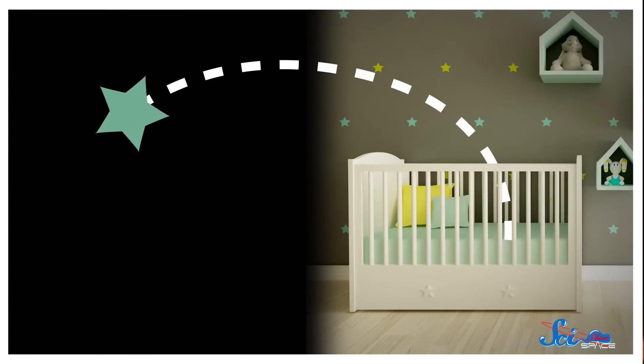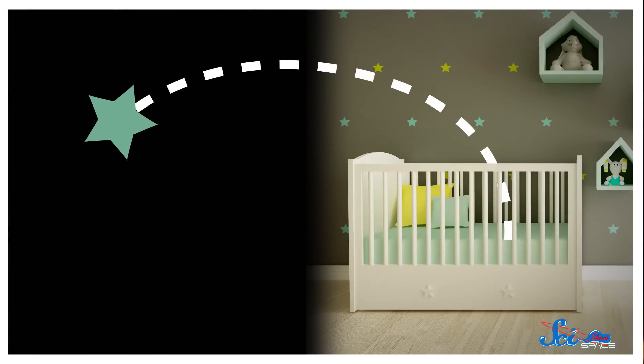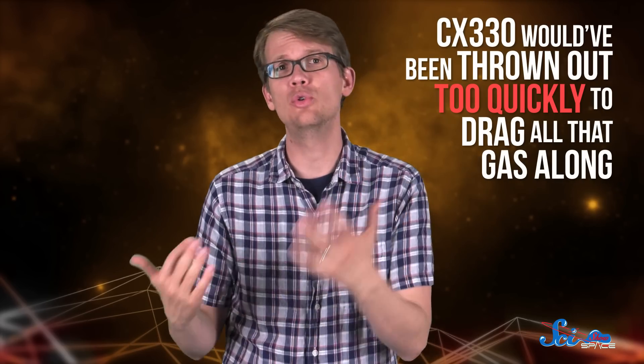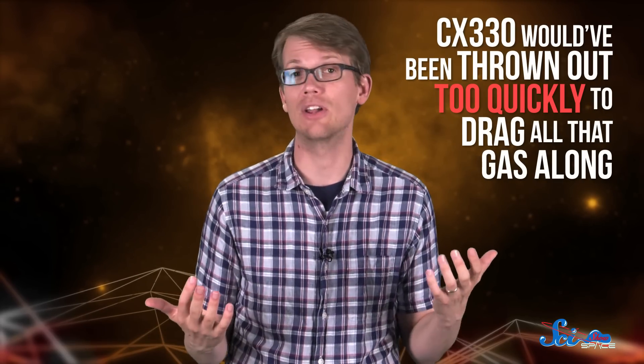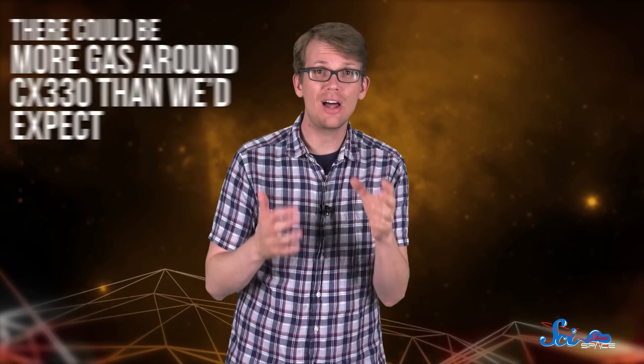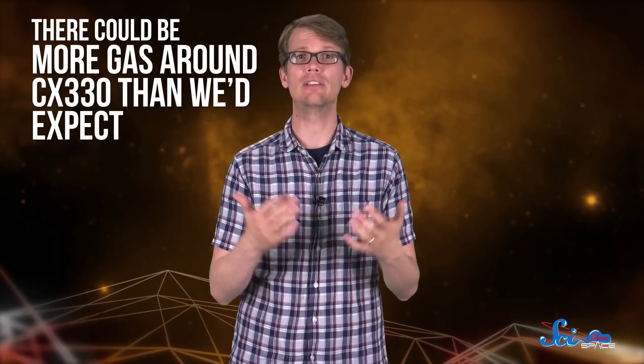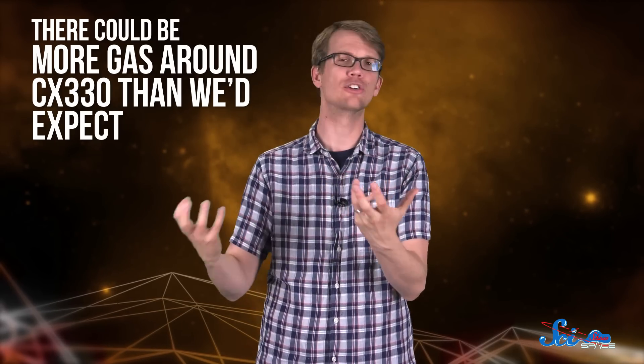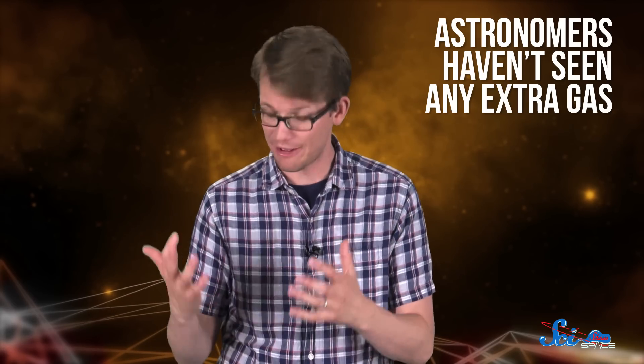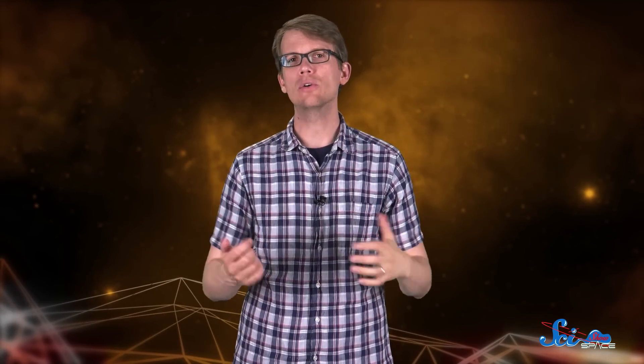CX 330 could have been thrown out of a nursery, but that wouldn't explain all the gas. The star is only about a million years old, so it would have been thrown out too quickly to be able to drag all that gas along with it. Another possibility is that there's a lot more gas around CX 330 than we'd expect, which would put the star in a kind of tiny nursery of its own. If all of this extra gas is there, astronomers haven't seen it, though they have been actively looking for it. So for now, CX 330's explosive growth is still a mystery.